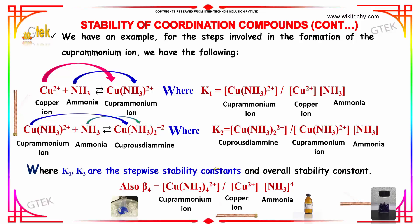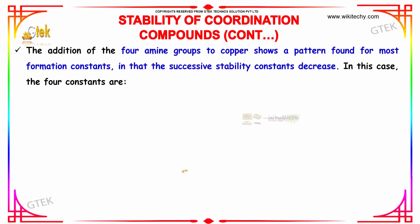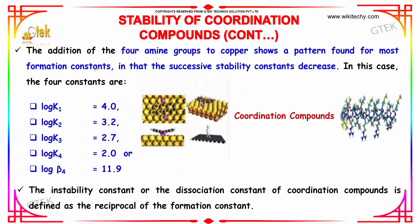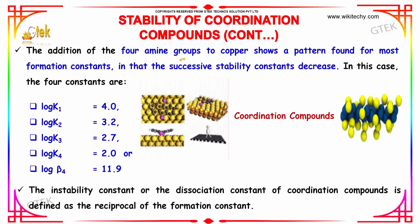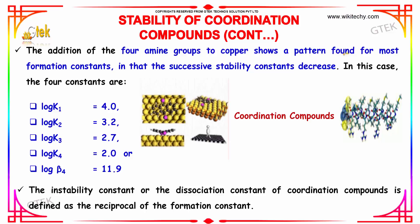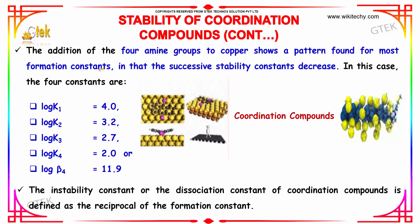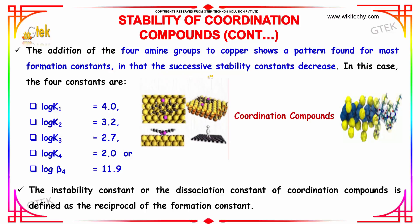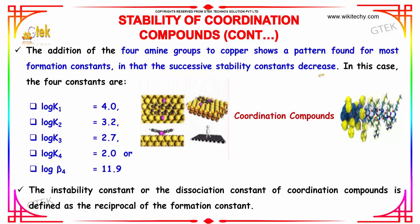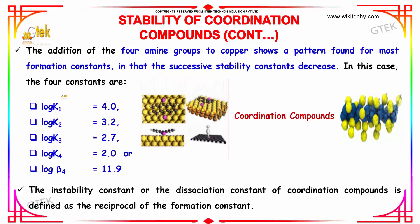This is referred to as stability constants. The addition of the 4 amine groups to copper shows a pattern found for most formation constants. In that the successive stability constants decrease. Here are the 4 constants.